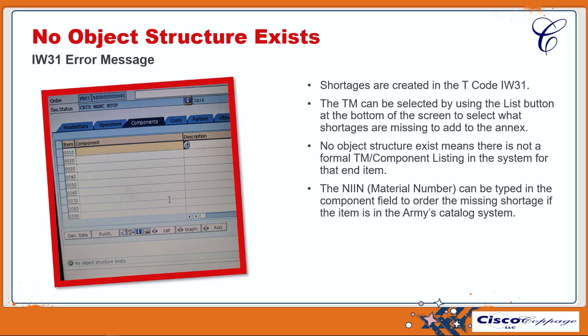The second takeaway is that the TM or technical manual can be selected using the list button at the bottom of the screen to select what shortages are missing to add to the annex inside IW31. The third takeaway is that the no object structure exists message simply means there is no formal TM or component listing in the system for that end item. If the NIN or material number is in the Army's catalog system, you can type that NIN in and that item will be placed on order.